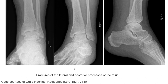Here we see the fracture of the lateral and posterior process of the talus. We can appreciate on the frontal and oblique view the lucency fracture line across the lateral process of the talus. On the lateral view, we can clearly see fragmentation and cortical defects at the posterior talus process.